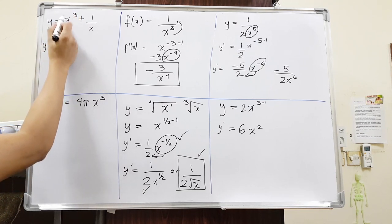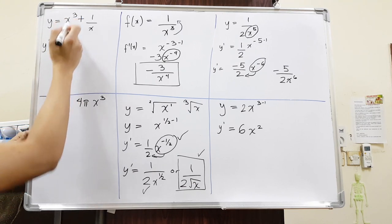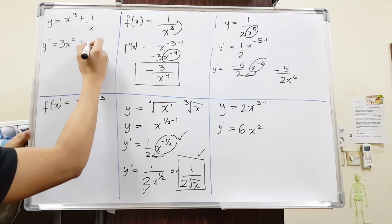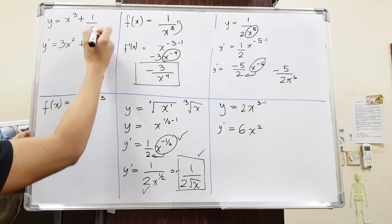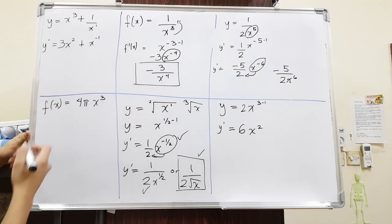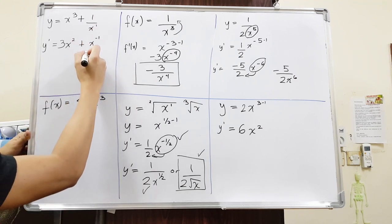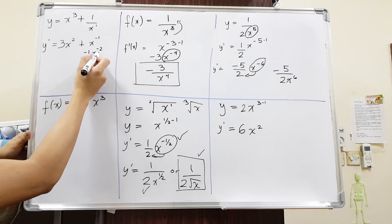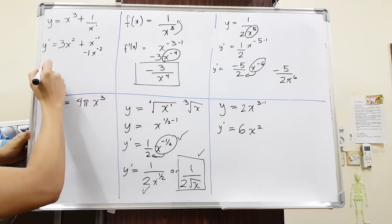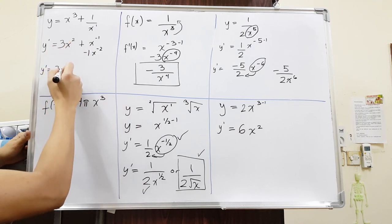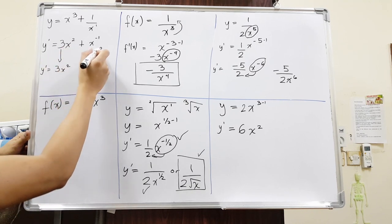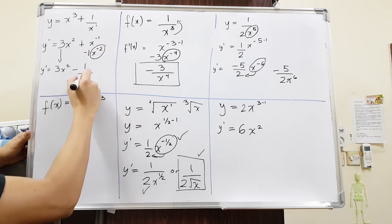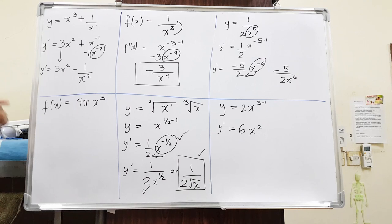So for the first term, 3 comes forward, giving 3x, and the power decreases by 1, so it's 3x squared. For the second term with x in the denominator, bring it on top as x to the negative 1, because it has an imaginary power of 1. Differentiating gives negative 1 to the front and x to the power of negative 2, since negative 1 minus 1 is negative 2. Writing the final answer: 3x squared minus 1 over x squared, to keep the power positive.